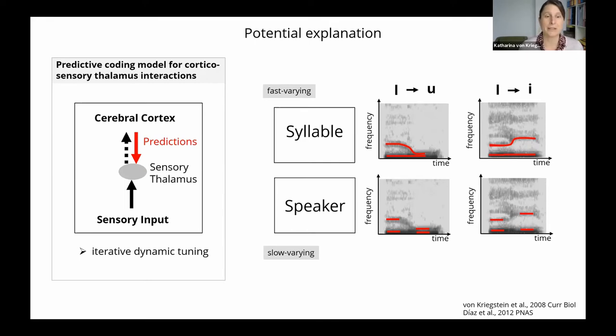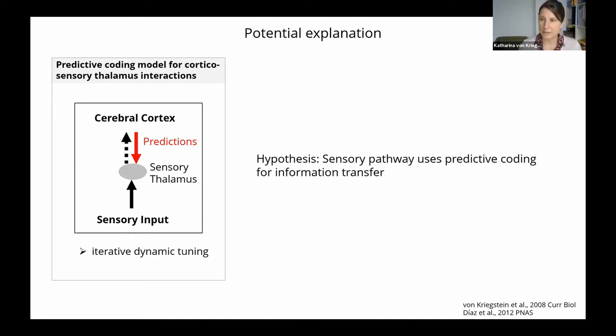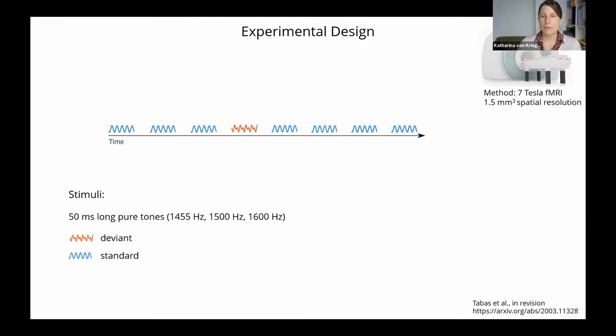So if this model is correct, we would expect that sensory thalamus responses can be explained by a predictive coding mechanism. And this is what we tested in the next experiment. So this was an oddball design. We performed this in a seven Tesla MRI with a high spatial resolution of 1.5 millimeter isotropic. Participants were listening to these sounds. These were of different frequencies. It was pure tones. There were the so-called standards, which were repeating tones. And then once in a while, there was a deviant, which was differing in frequency from the standards. These deviants could occur at three different positions. This is the deviant in position four. They could also occur at position five and six of the sequence. And the participant's task was to report as accurately and quickly as possible the location of the deviant.